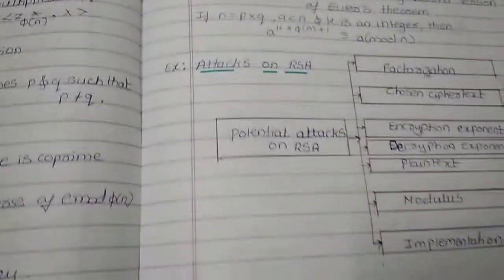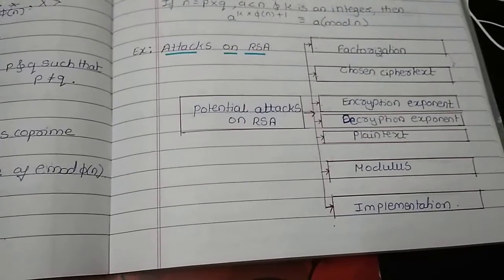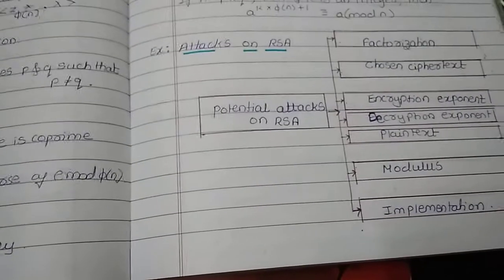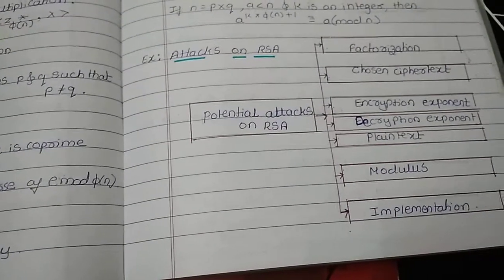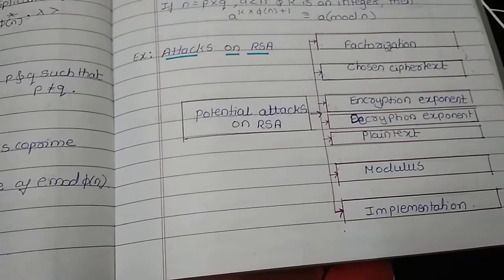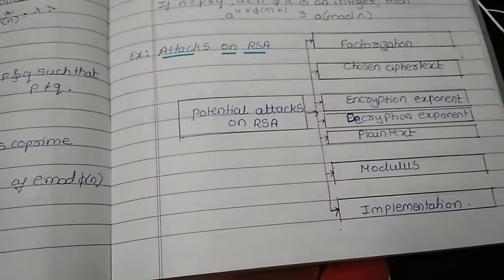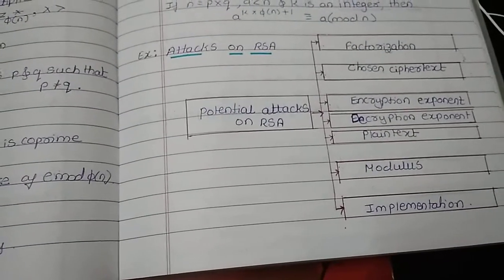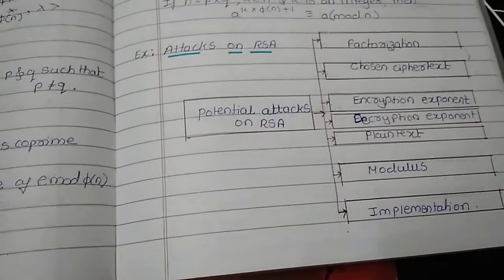For attacks on RSA, these are the few attacks: factorization attack, then comes the chosen ciphertext, encryption exponent, decryption exponent, plaintext, modulus and implementation. All these things have been explained in our previous video. Please do check that one.